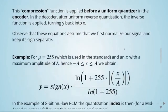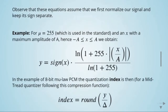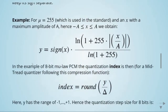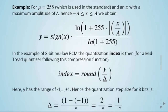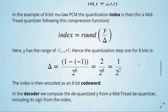Here we perform some normalization. This is an example of 8-bit mu-law quantization. We have the quantization index — we are rounding, so this is a mid-tread quantizer as seen before. The output y has a range of minus 1 to plus 1, so it is normalized. The quantization step size for 8 bits is computed accordingly, and this index is then encoded as an 8-bit code word.